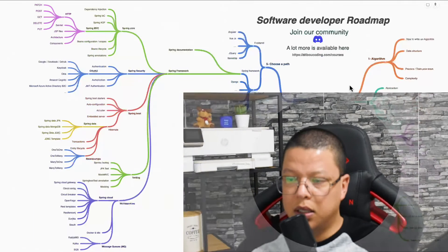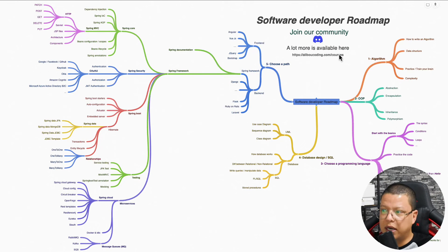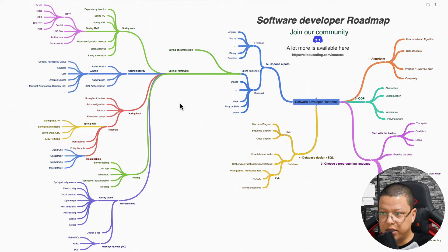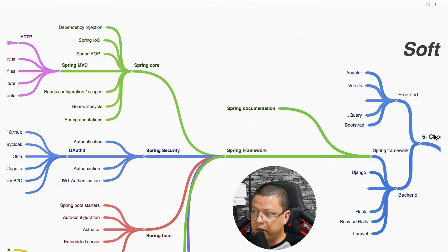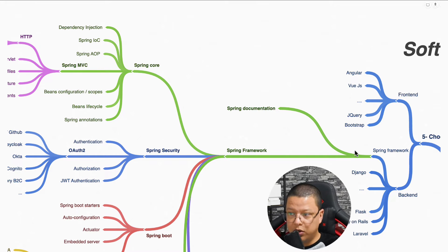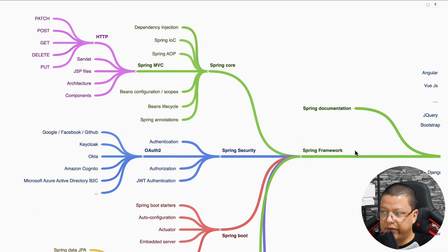Let's start and walk through the Spring Framework roadmap. Some time ago I published the right-hand side of this roadmap, which I called the software developer roadmap. Now you asked for the Spring Framework roadmap, and here it comes. From the 'choosing a path' section — back end or front end — I already mentioned Spring Framework as a back-end framework to learn, and now let's dive into it.